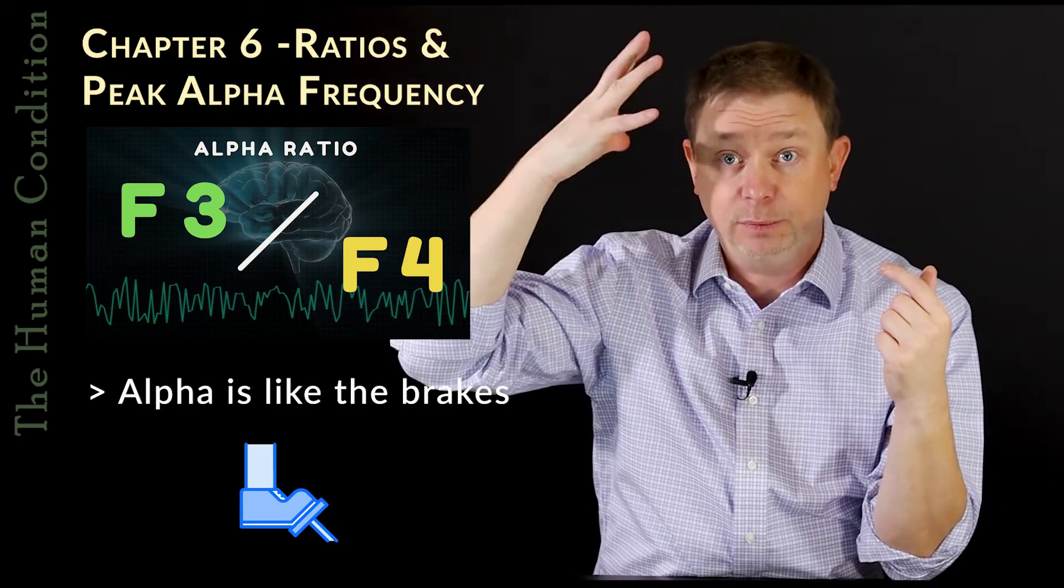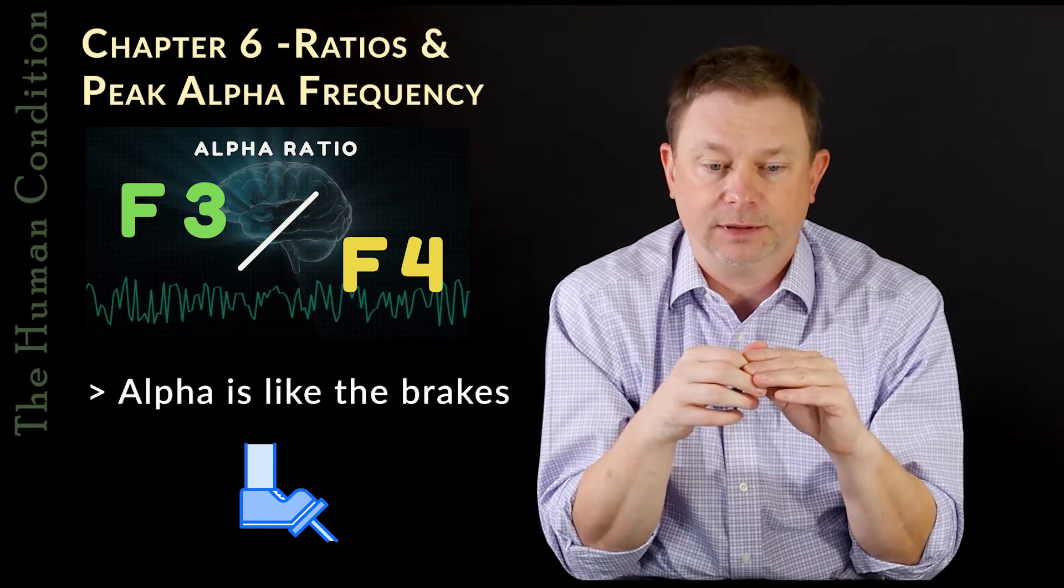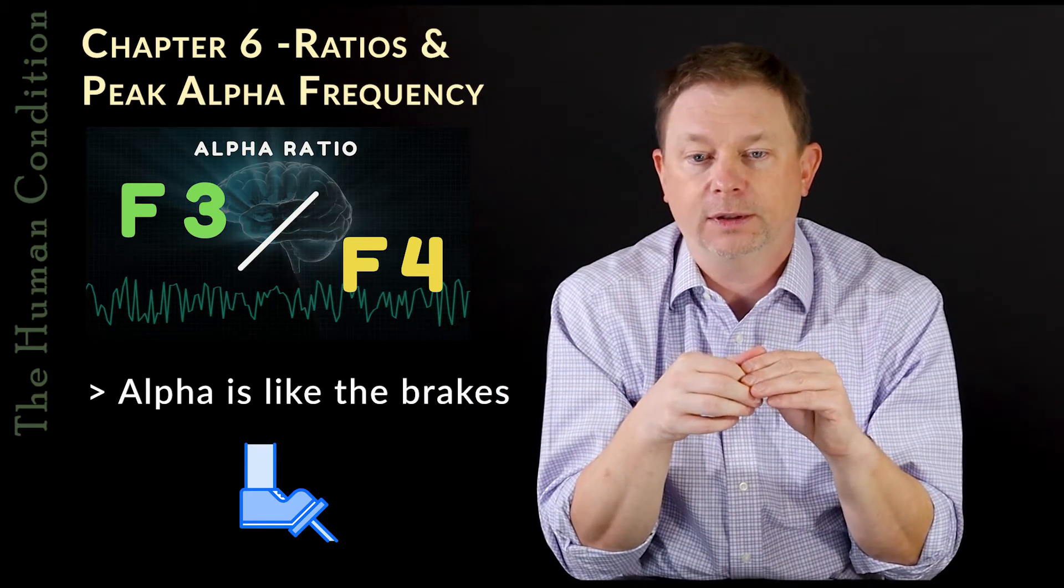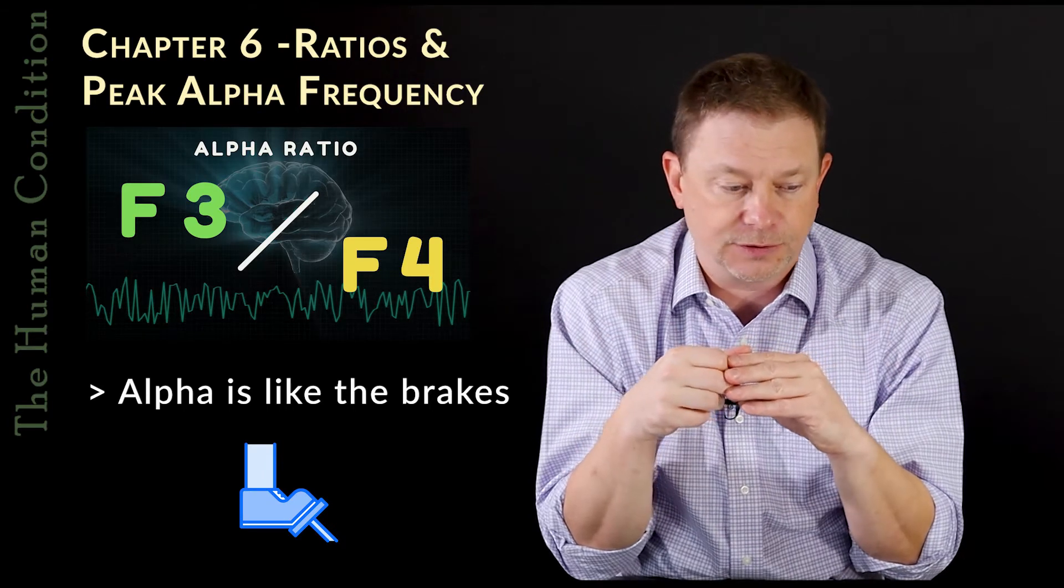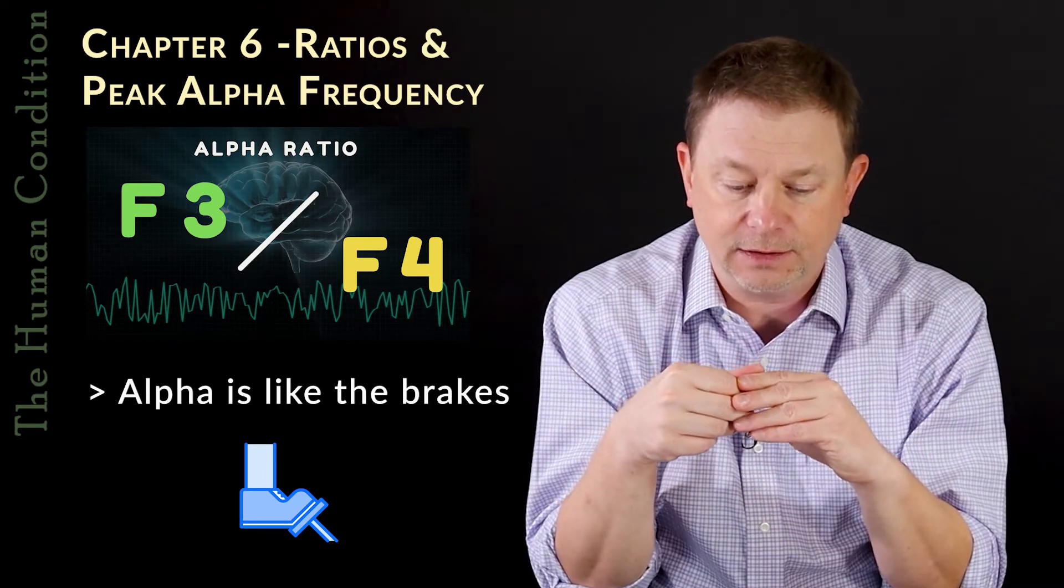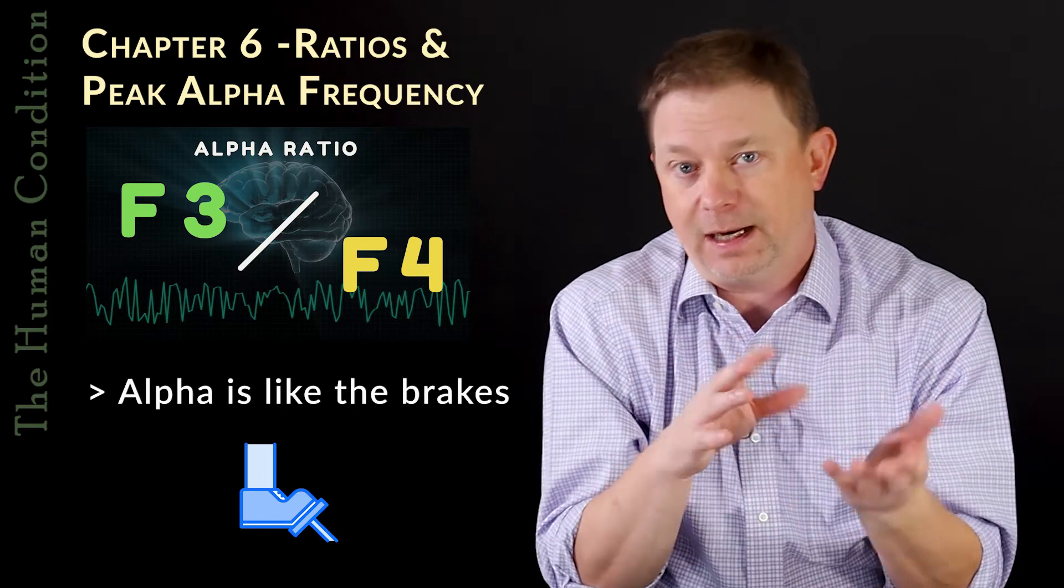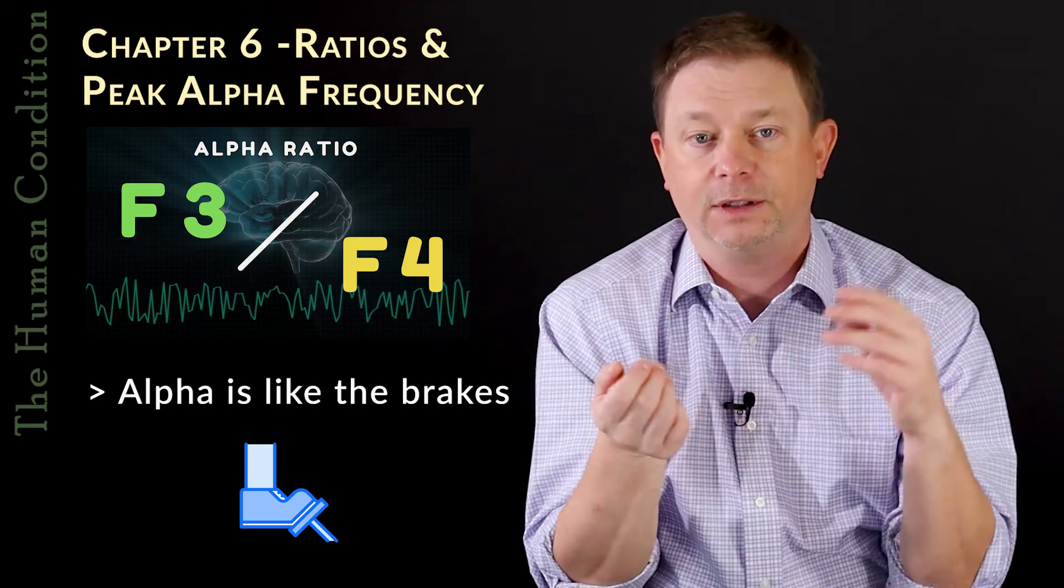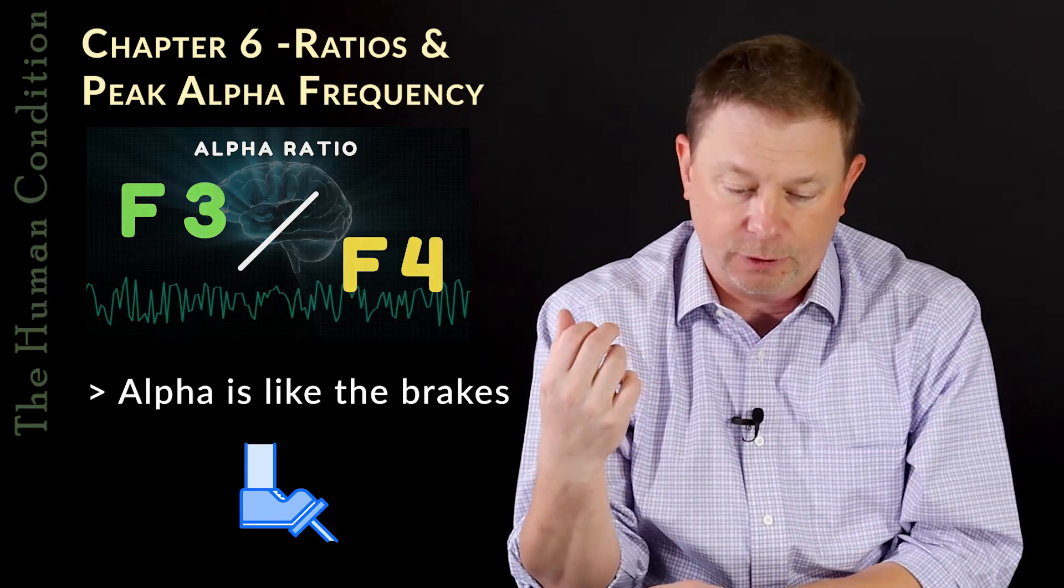And so that would give us more of that anxiety condition. So the idea is you have to understand that F3, F4 alpha is the opposite of what you intuitively think of when you think of a strong left frontal lobe or a strong right frontal lobe.